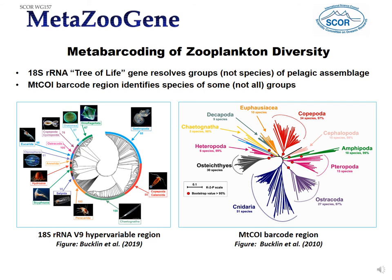You see here the tree based on the 18S tree of life gene — a very short V9 hypervariable region on the left — and on the right the CO1 barcode tree where we've identified species and looked for species relationships. These are long-standing investigations into barcodes and metabarcodes, which have been ongoing for a long time. MetaZoGene walked into a very complicated, very fast-moving field.